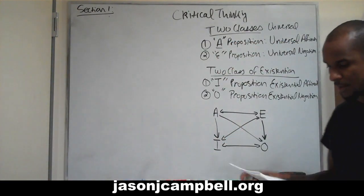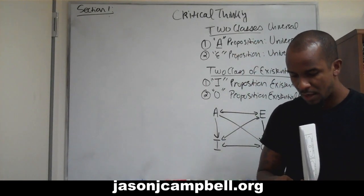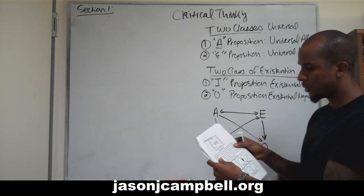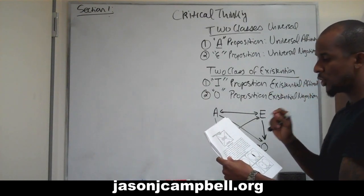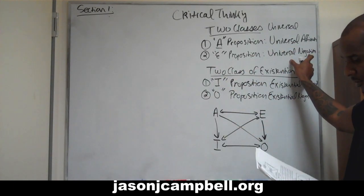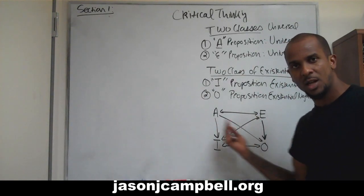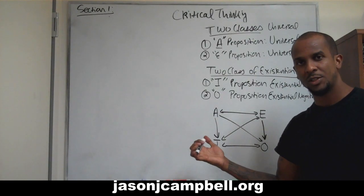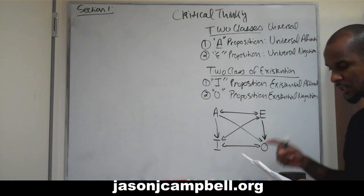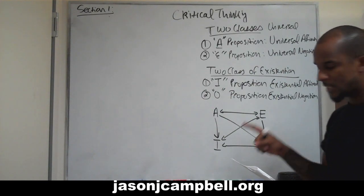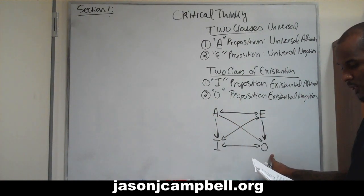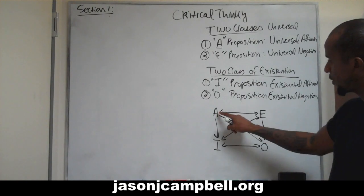I'm just going to read this so you have an understanding, since I've already talked about the logical relationships. A, the universal affirmation, is contrary to E, the universal negation. A is contradictory to O, the existential negation. And A is superaltern to I, the existential affirmation.